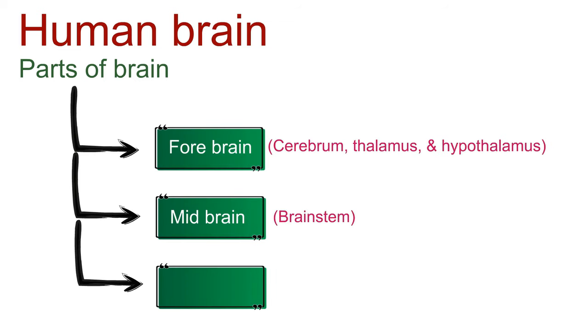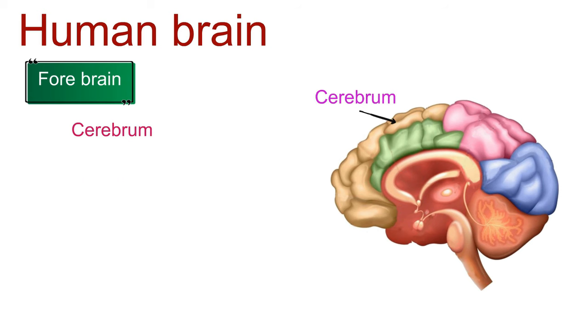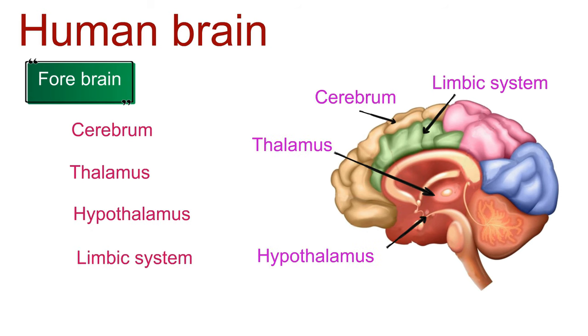The human brain can be divided into three major regions: forebrain, midbrain, and hindbrain. Welcome to the brain's VIP section, also known as the forebrain. Let's take a fun tour through its star players.